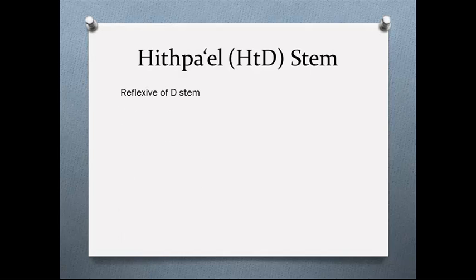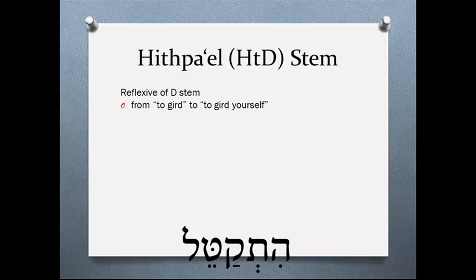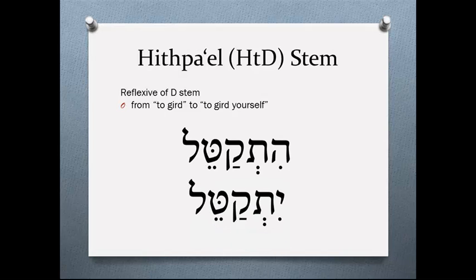The Hithpael tends to be the reflexive of the D stem — from 'to guard' to 'to guard yourself.' Notice the HT on the perfect form: hithqatel. These older names for the stems used pa'al, the verb 'to do,' as the model verb. The newer names are HTD, D, and DP. The Hithpael is the perfect form, and yithqatel — where the hey goes away — is the imperfect form of the HTD stem.